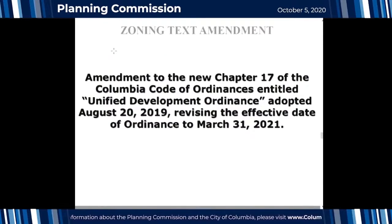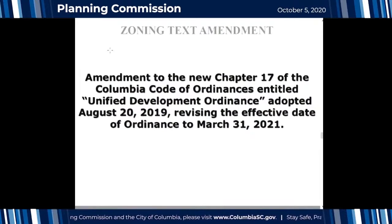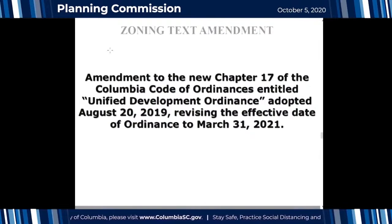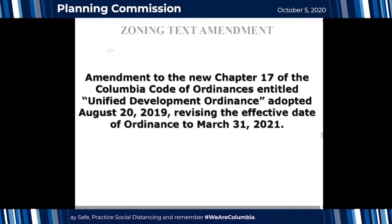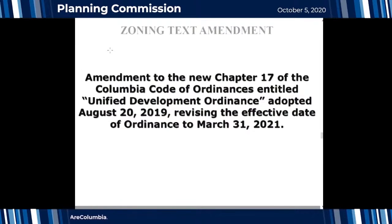The next regular agenda item is an amendment to the new Chapter 17 of the City of Columbia Code of Ordinances, revising the effective date. Rachel Bailey explains: earlier in the year the effective date was updated to November, with public meetings planned for March 2020, but COVID-19 disrupted that schedule. The team regrouped and redid their public outreach plan using virtual public meetings. They are now back on track and requesting the effective date of the code and map be updated to March 31, 2021.